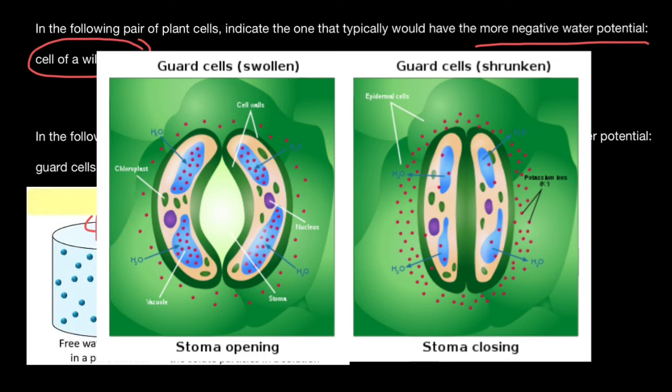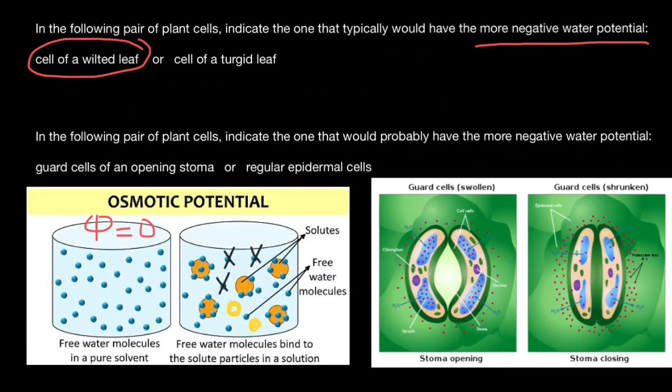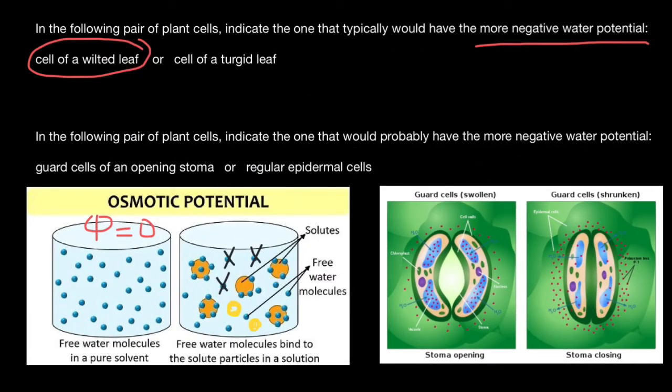Now we are ready to check our question and answers again. In the following pair of plant cells, indicate the one that would probably have more negative water potential: guard cells of an opening stoma or regular epidermal cells. And guard cells would open, as you see,